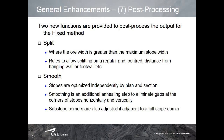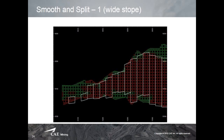Here is an example: this screen shows a block model with optimized stopes and no smoothing applied. The next slide shows the smoothing feature, which eliminates some of the corners for a much more realistic scenario.